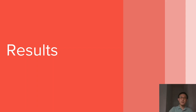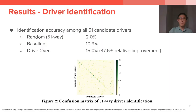Now let's go over the results. The first task is full 51-way driver identification. A random predictor would have 1.96% accuracy. A baseline that we replicated has 10.9% accuracy. Our Driver2Vec model has 15.0% accuracy, which represents a 37.6% relative improvement over the baseline.